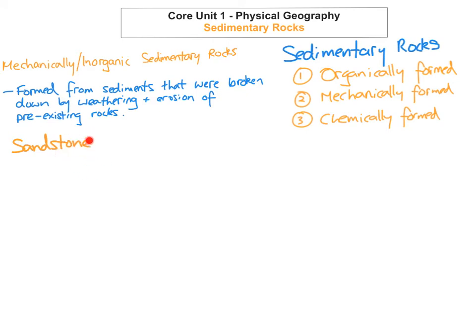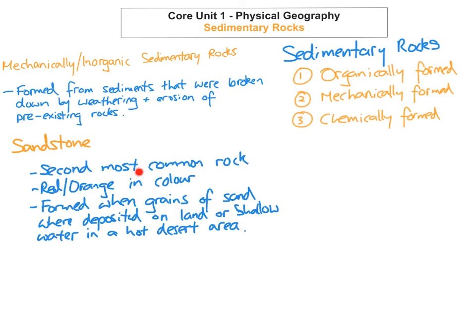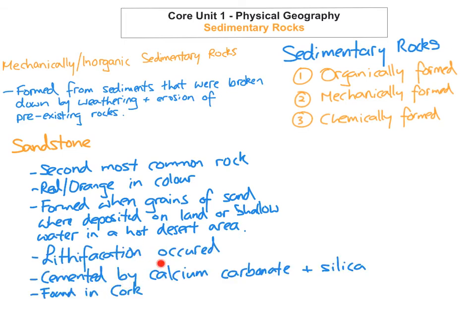Sandstone was formed mainly from grains of sand in a hot desert climate. These grains of sand were deposited on land or in very shallow water, and then compressed together through the process of lithification. Sandstone is red or orange in colour. Cementation by calcium carbonate and silica bonded the fragments together to form sandstone. It is found in County Cork and in large parts of Munster.